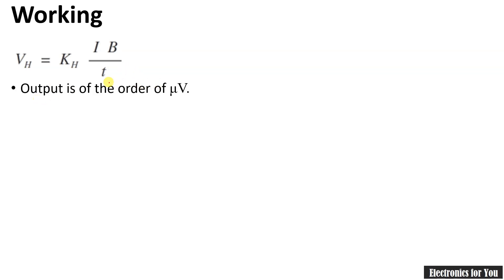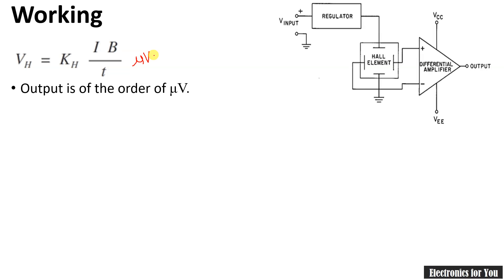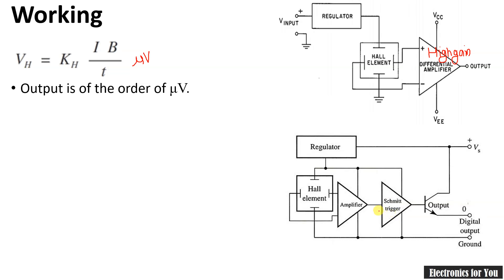The output voltage here is very low — of the order of microvolts. For analog purposes, a high-gain DC differential amplifier is used, along with a regulator that provides a constant DC supply. For digital purposes, a Schmitt trigger is used to convert the analog signal into a digital one, and a transistor is used as a switch so that we get the output in terms of zeros and ones. The first circuit is for analog purpose and the second is for digital purpose.